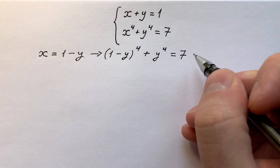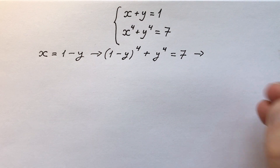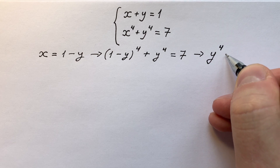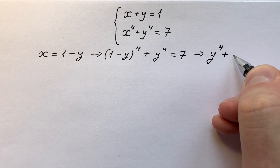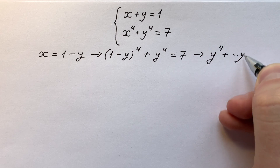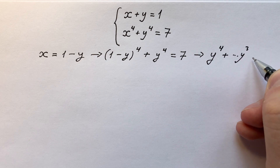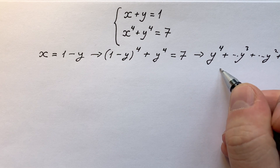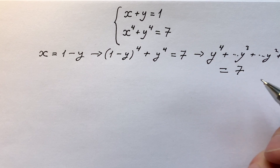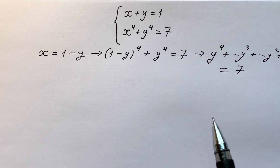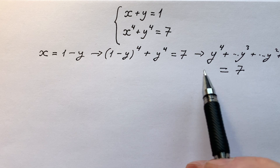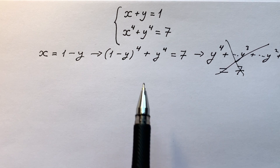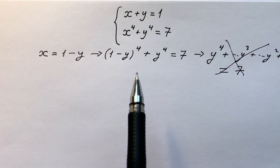Now we're going to have a really crazy quartic equation — terms like a cubic, a squared, and more — and it equals 7. It's really hard to solve this way. There must be another approach.